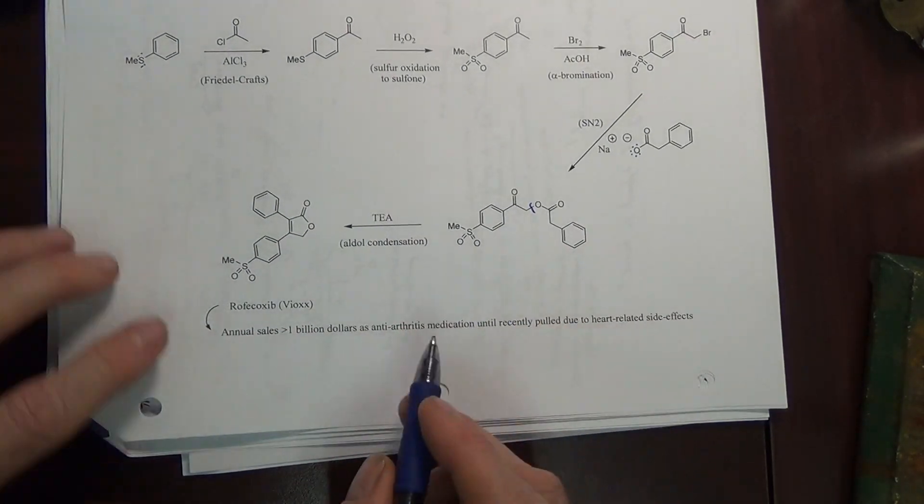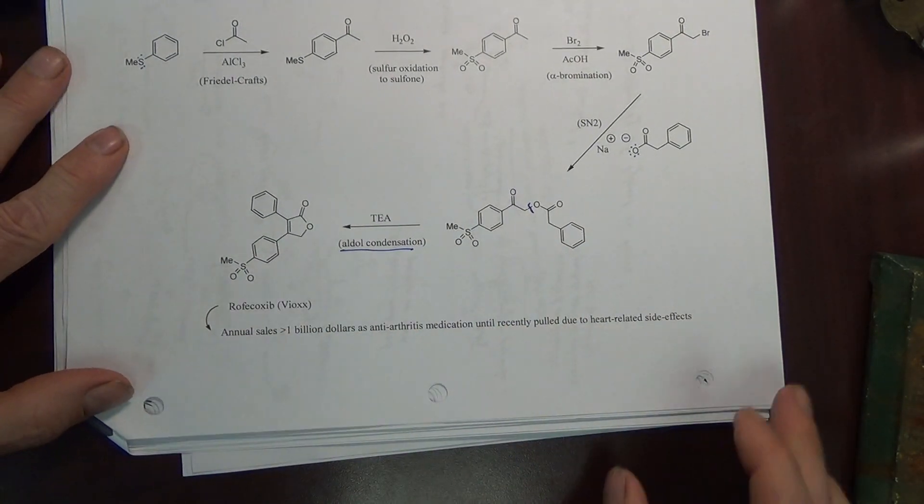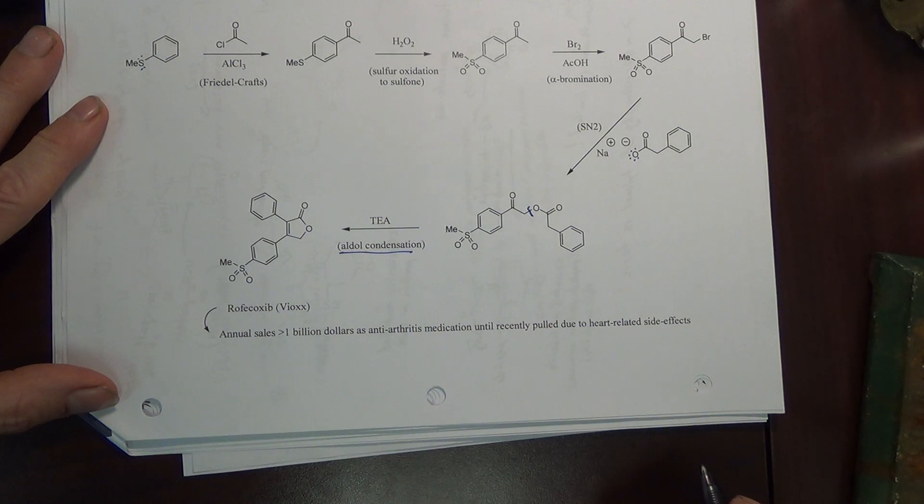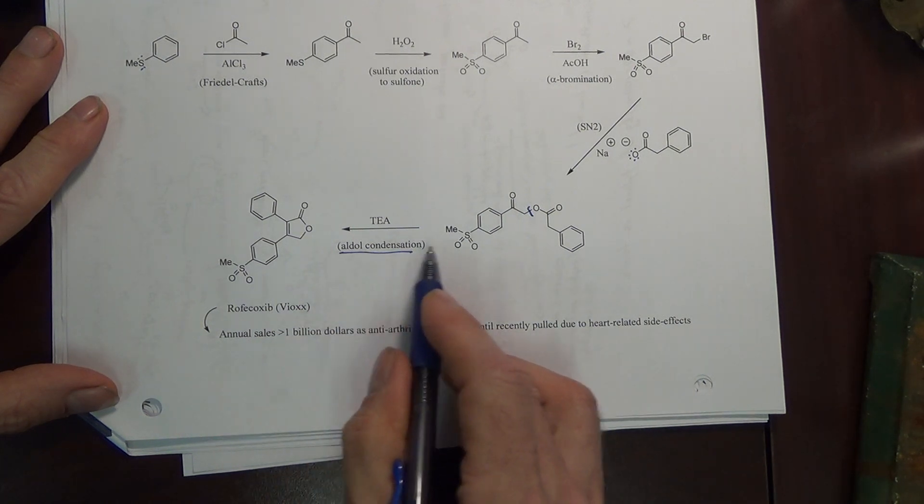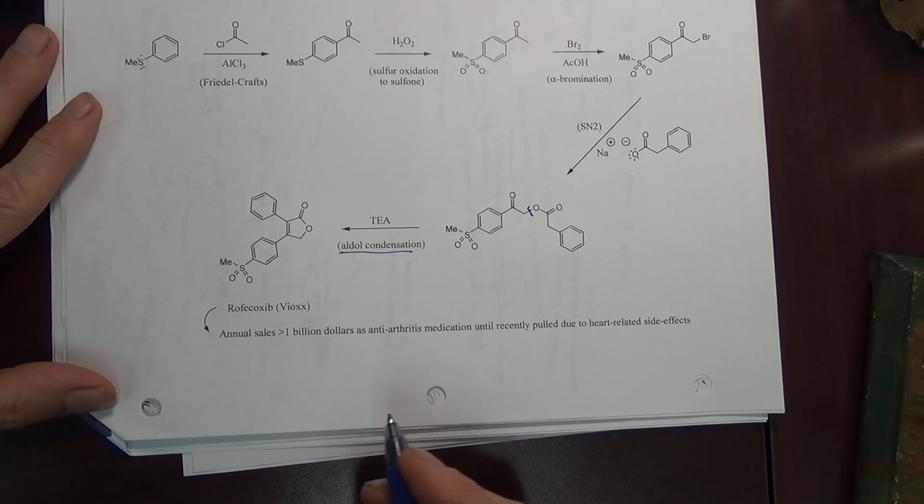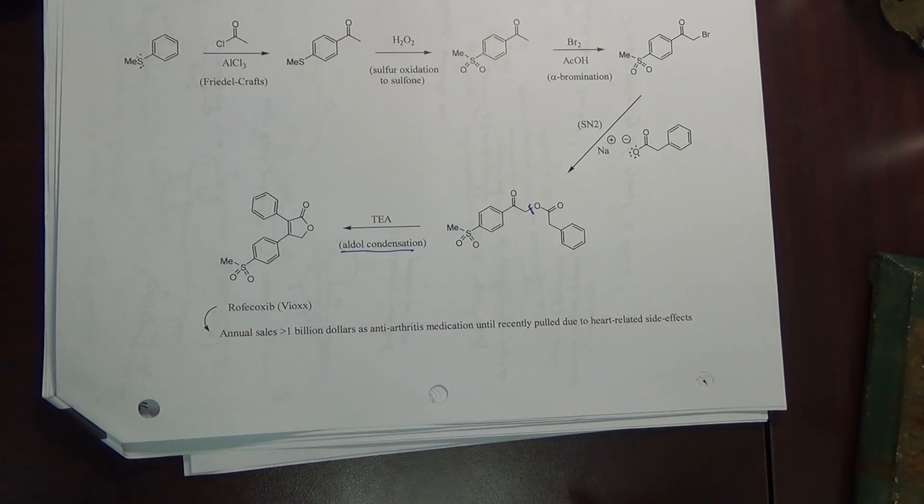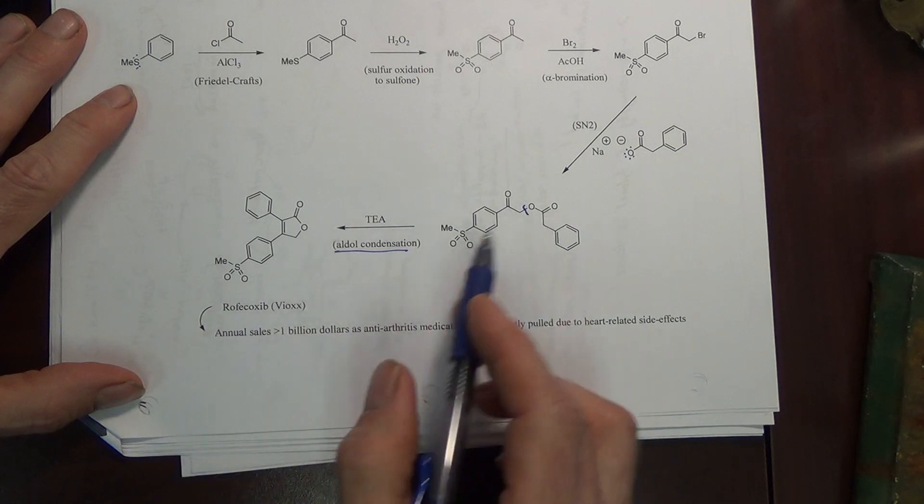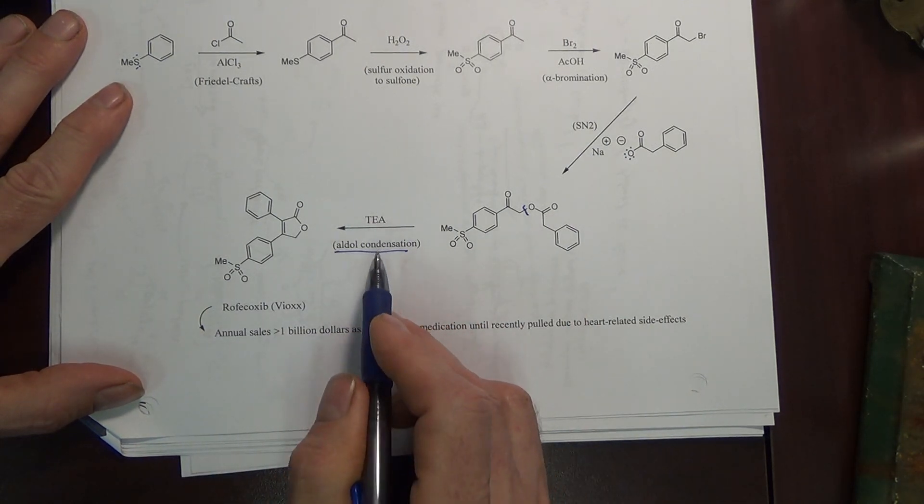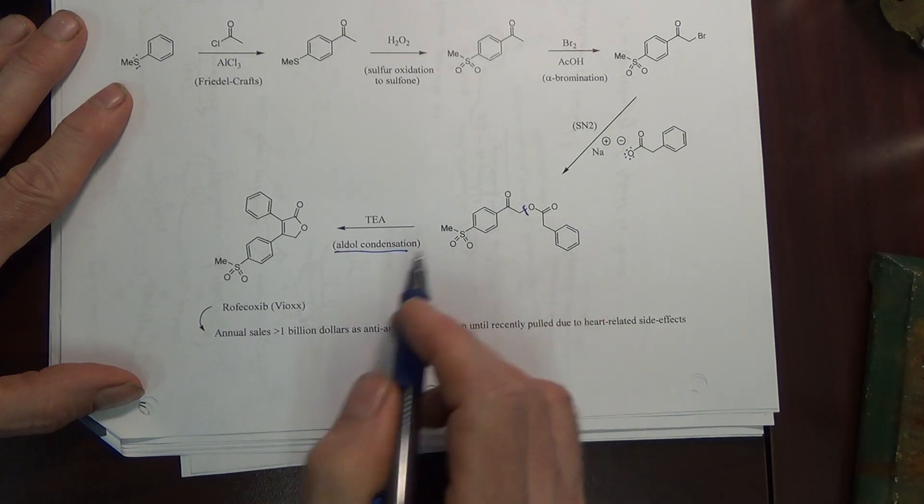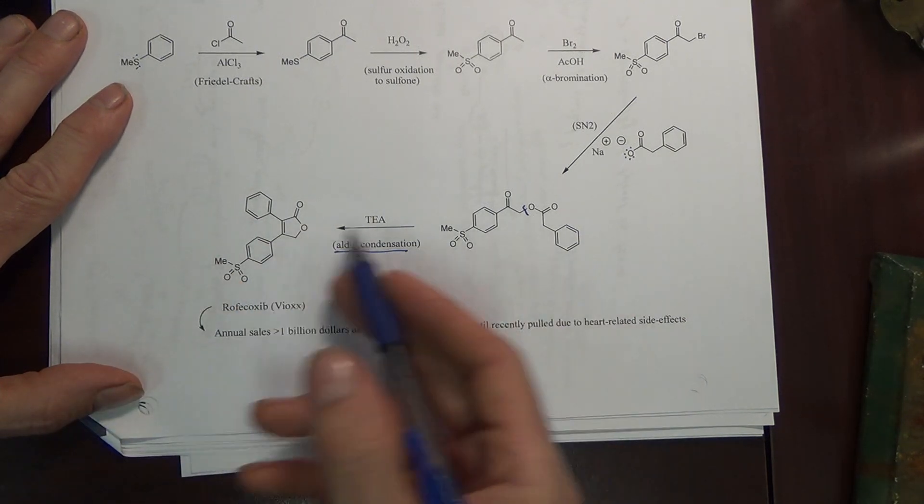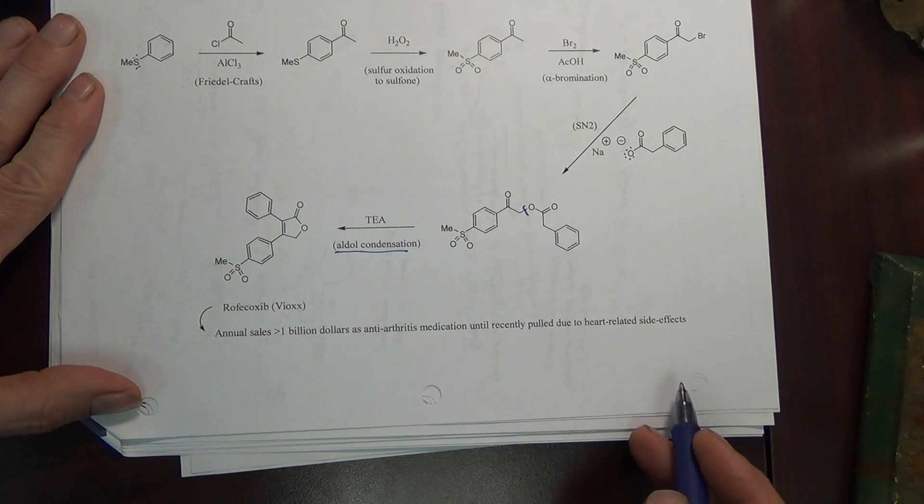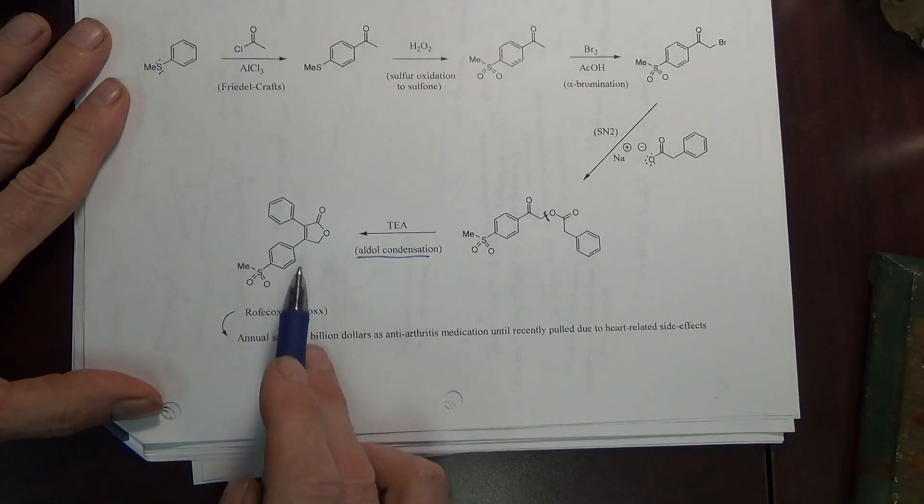This molecule undergoes an aldol condensation. It's actually an intramolecular aldol condensation. When we make a chalcone, we do an aldol condensation reaction, but that is intermolecular. Triethylamine is the base, it is strong enough to do enolate chemistry. What enolate carbanion is attacking what carbonyl? Important to understand what's going on here.